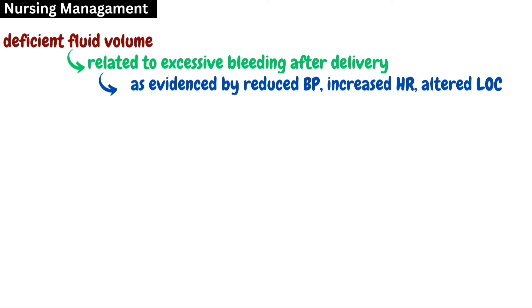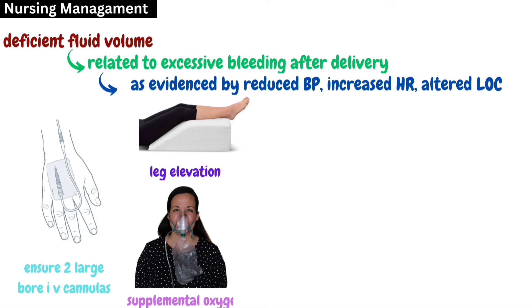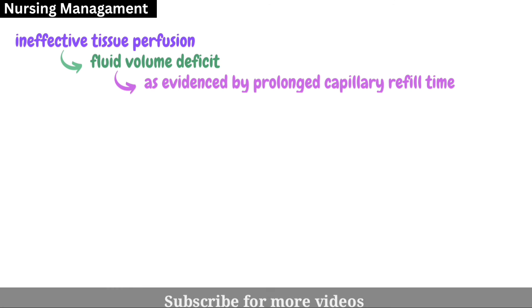For nursing management, the first nursing diagnosis is deficient fluid volume related to excessive bleeding after delivery, as evidenced by reduced blood pressure, increased heart rate, and altered level of consciousness. Nursing interventions include ensuring two large-bore IV cannulas to infuse large volumes of IV fluids, elevating the legs to improve venous return, administering supplemental oxygen as prescribed, infusing large volumes of crystalloids or volume expanders as prescribed, and initiating blood transfusion if needed.